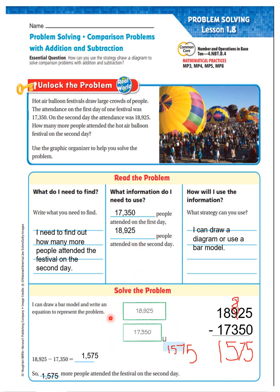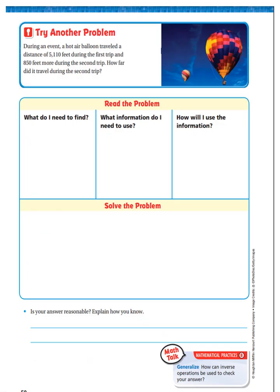This is the model I used because it wants me to draw a model — it says up here a diagram. A diagram is a type of model. Now this time we're going to mix things up a little bit. I want you to try this problem: During an event, a hot air balloon traveled a distance of 5,110 feet during the first trip and 850 feet more during the second trip. How far did it travel during the second trip? Write it out just like we did on the other slide, then pause the video, complete this page, and start the video again.